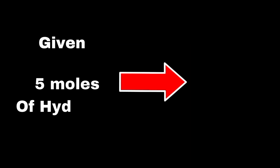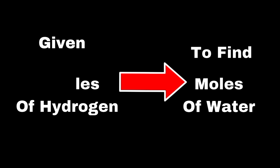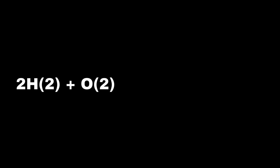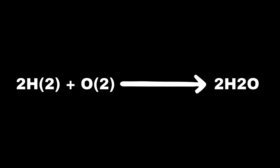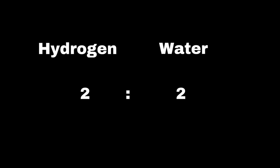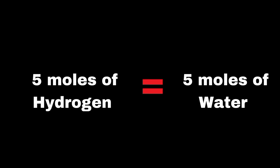For example, let's say we start with five moles of hydrogen and want to know how many moles of water will be produced. Using the balanced equation for water formation — 2H₂ + O₂ → 2H₂O — we can see the mole ratio is 2 to 2 between hydrogen and water. This means that for every two moles of hydrogen, two moles of water are produced. So if we start with five moles of hydrogen, since the ratio is one to one, five moles of hydrogen will produce five moles of water.